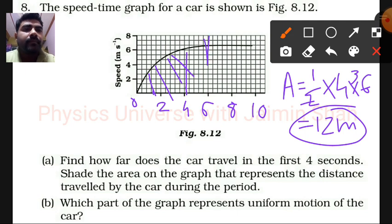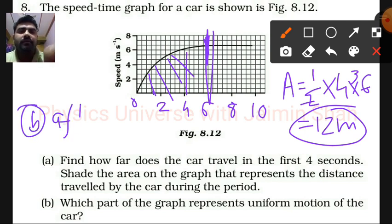After this 6 seconds, the graph will be uniform. So for this question, the answer is: after 6 seconds, the graph represents uniform motion of that car.